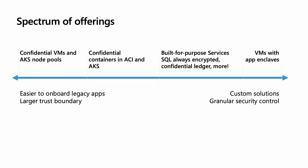Before we head into the actual topic, I just want to give a brief overview of the spectrum of offerings that we have in confidential computing at Azure. Towards the left-hand side, we have confidential VMs and AKS node pools that are easier to onboard legacy apps and have the largest trust boundary. As we move towards the right, we have VMs with app enclaves that are custom solutions providing granular security control. Confidential containers provide a more balanced approach for building confidential workloads on the cloud, and today we'll be concentrating on confidential containers in ACI.